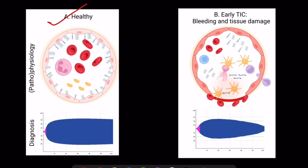On the right you see trauma-induced coagulopathy, which arises from severe tissue damage and hemorrhagic shock. It is characterized by widespread endothelial cell activation with glycocalyx release, impairment of platelet function, consumption of coagulation factors, and dysregulated anticoagulation and hyperfibrinolysis. Together, these factors result in an inability to form and maintain clots.